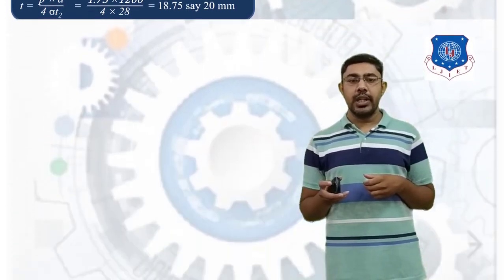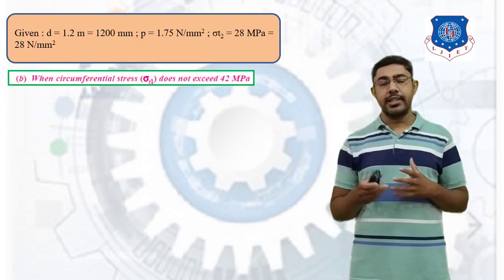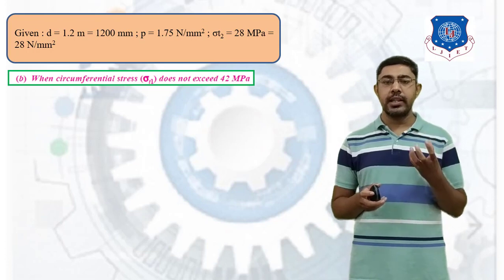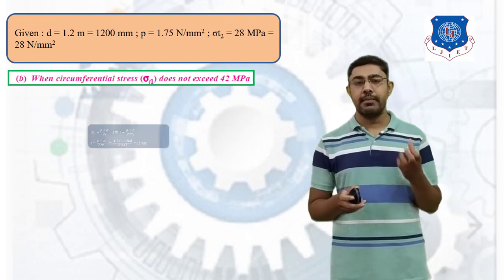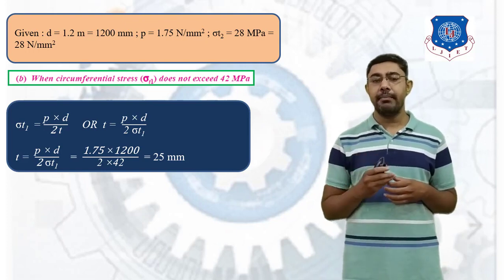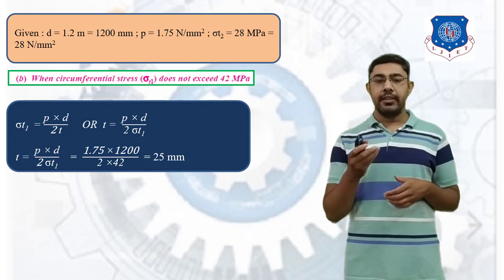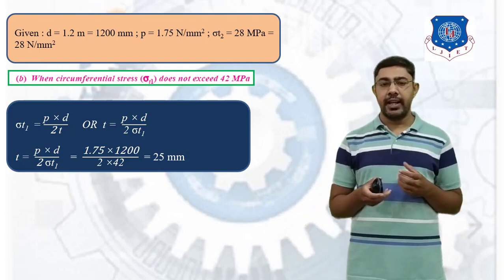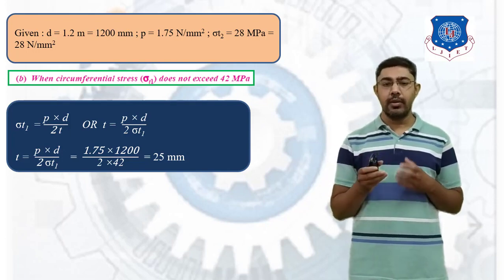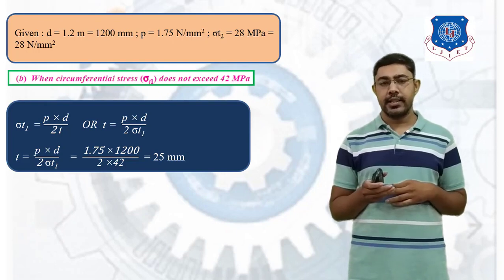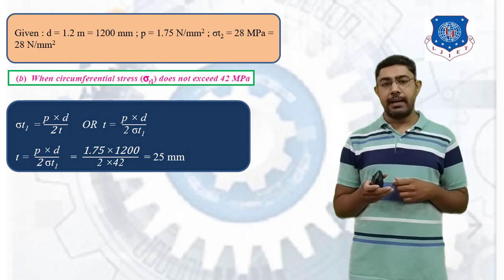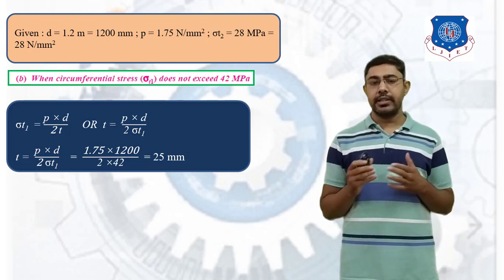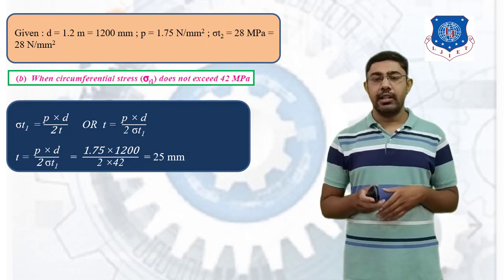Case B: when the circumferential stress sigma T1 does not exceed 42 MPa. The equation for hoop stress is sigma T1 = P·D / (2T). Rearranging: T = P·D / (2·sigma T1). Substituting P = 1.75, D = 1200 mm, and sigma T1 = 42 MPa, the thickness of the pressure vessel according to the circumferential stress is 25 mm.